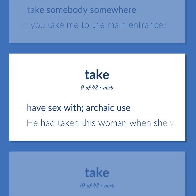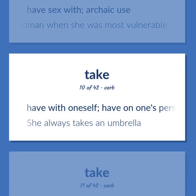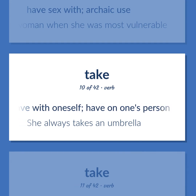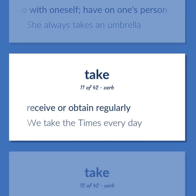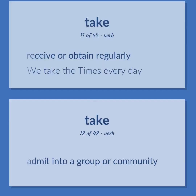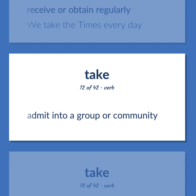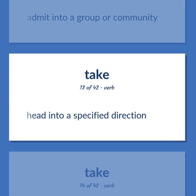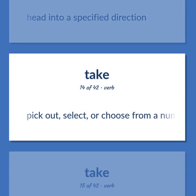Have sex with (archaic use). He had taken this woman when she was most vulnerable. Have with oneself; have on one's person. She always takes an umbrella. Receive or obtain regularly. We take the Times every day. Admit into a group or community. Head into a specified direction. Pick out, select, or choose from a number of alternatives.